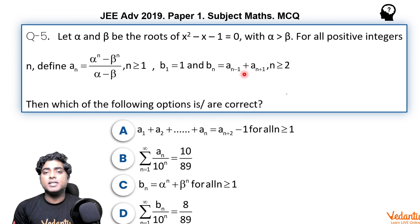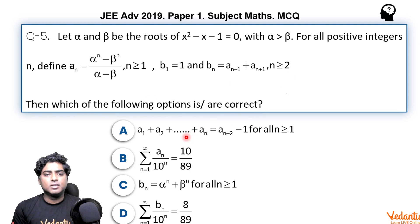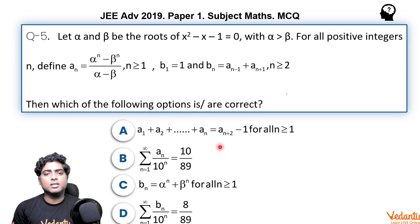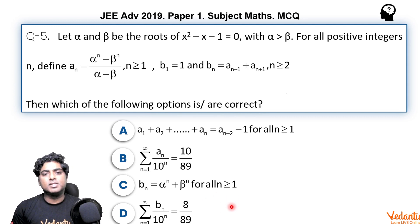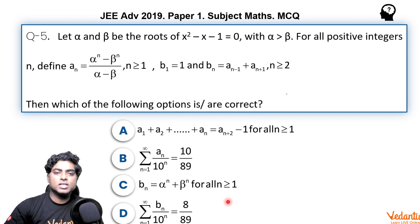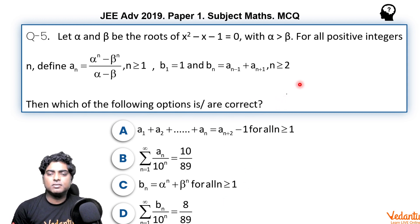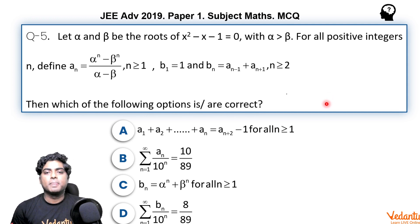b_1 is defined as 1, and b_n = a_(n-1) + a_(n+1) for all n greater than 2. Options A and B are concerned with values of a_n, while options C and D need to be checked separately. The question looks lengthy, but I'll show you how we can easily and quickly verify these options.